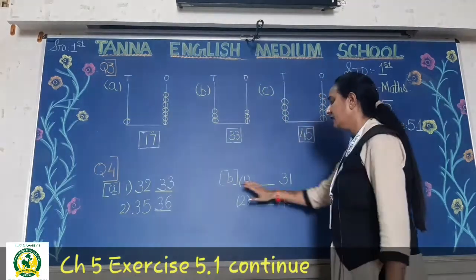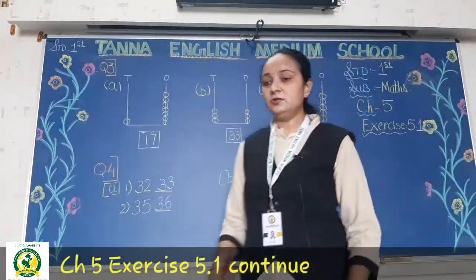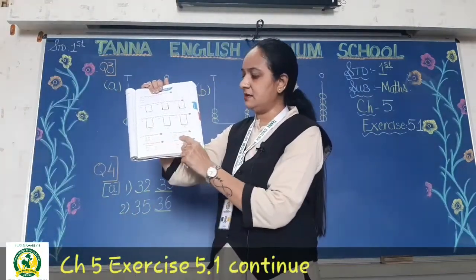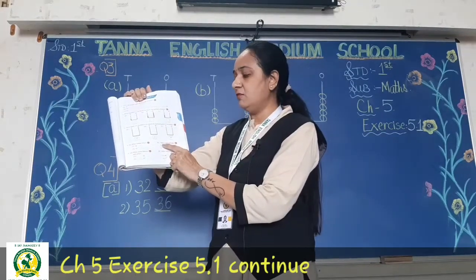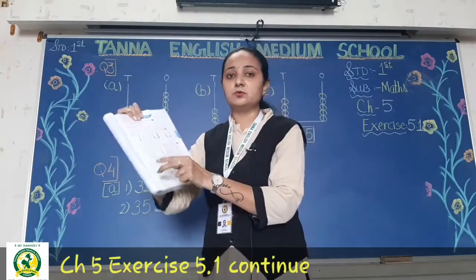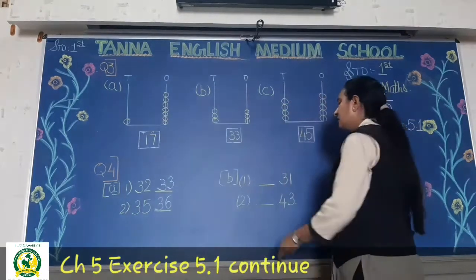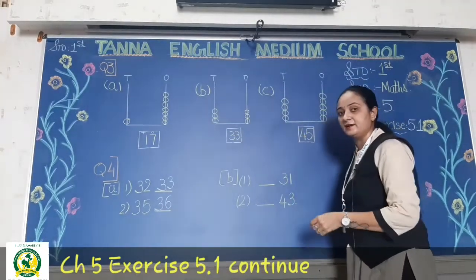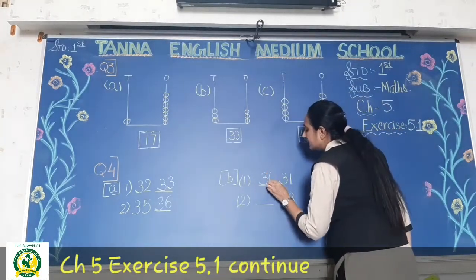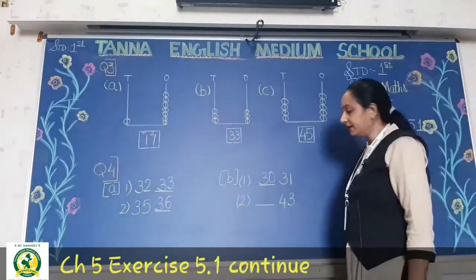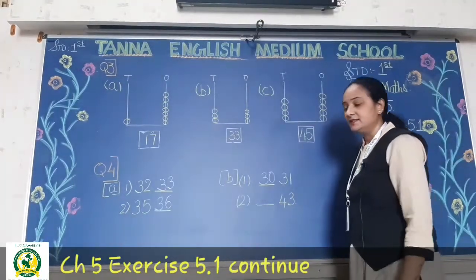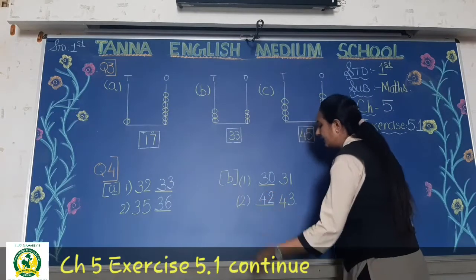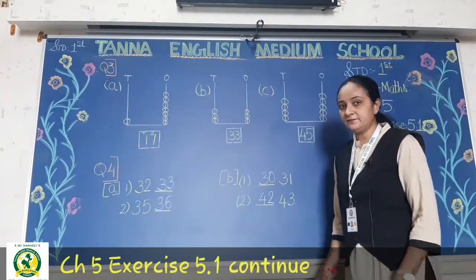Now B — look at the next part. In question number 4 we did A; now here for B, what comes before? So what comes before 31? Before 31 what will come? 30. And before 43? Yes, 42. So you will write here 42. Done.